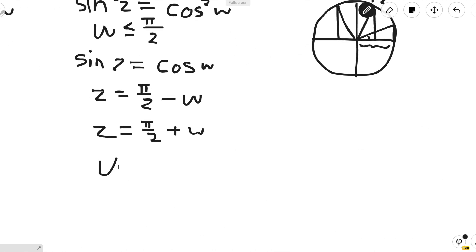Now let's move on to w > π/2. In this case, sin z would equal negative cos w because cosine of w is negative in this region.